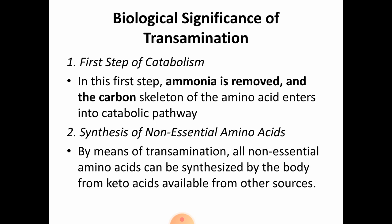Since it is 3 marks, you also need to give the significance. First, transamination is the first step of catabolism — ammonia is removed and the carbon skeleton of the amino acid enters the catabolic pathway. Second, it is significant for the synthesis of non-essential amino acids, which can be synthesized from keto acids available from other sources.